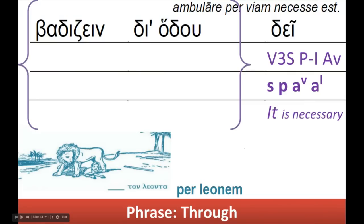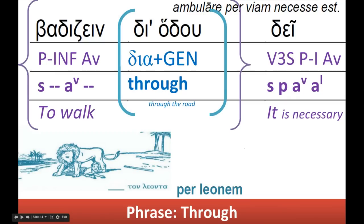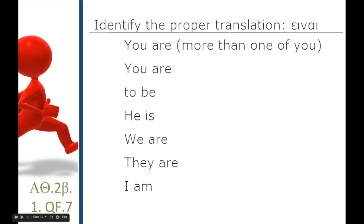'Day' is often used as an impersonal verb: 'it is necessary to walk' — infinitive. 'The' plus the genitive is a through-phrase: 'through the road.' Notice these brackets tell you this is another clause. 'Through the road' goes with the walking verb instead of 'day.' The proper translation of 'ani,' the infinitive, is 'to be.'